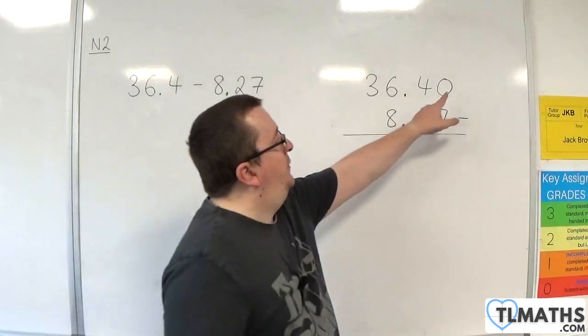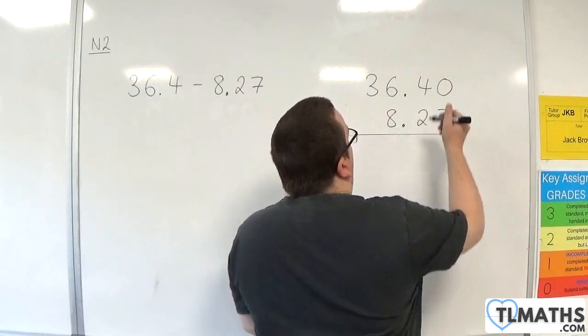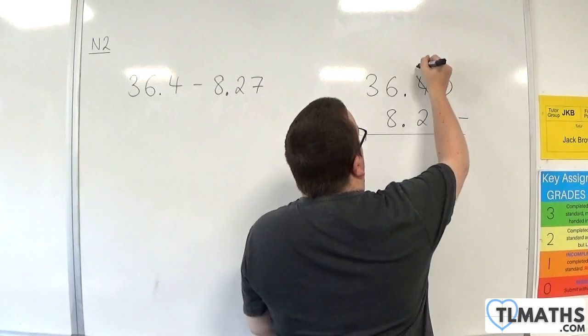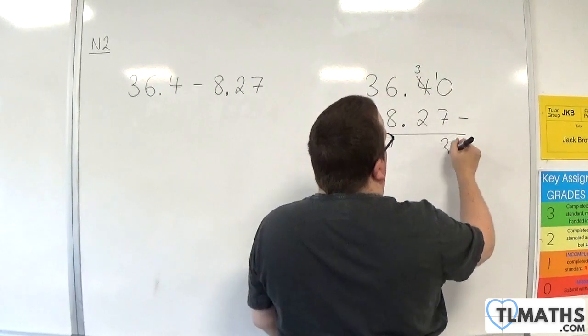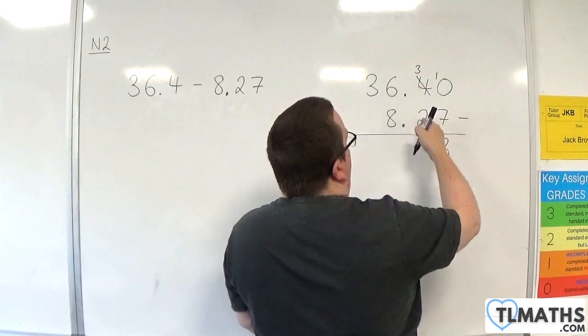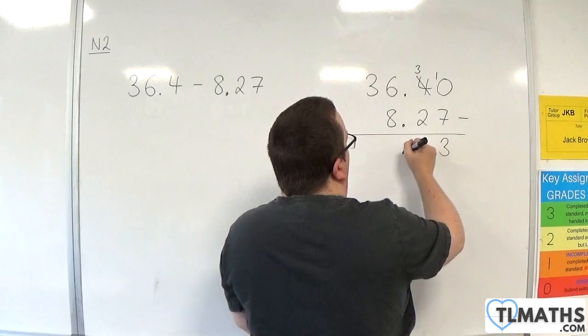So, we have 0 take away 7. Can't do that. So, we have to borrow 1 from the 4. So it becomes 3. And the 0 becomes 10. 10 take away 7 becomes 3. 3 take away 2 is 1. Bring the decimal point down.